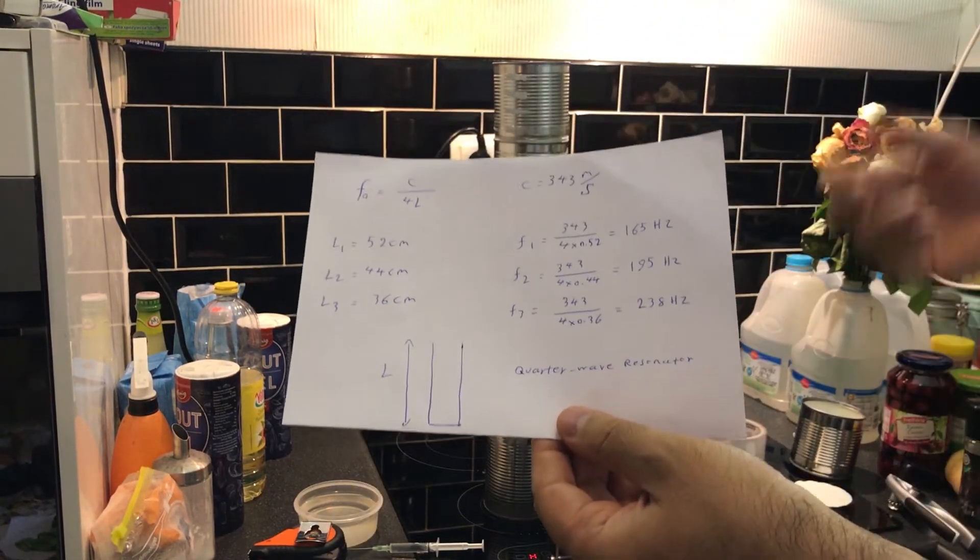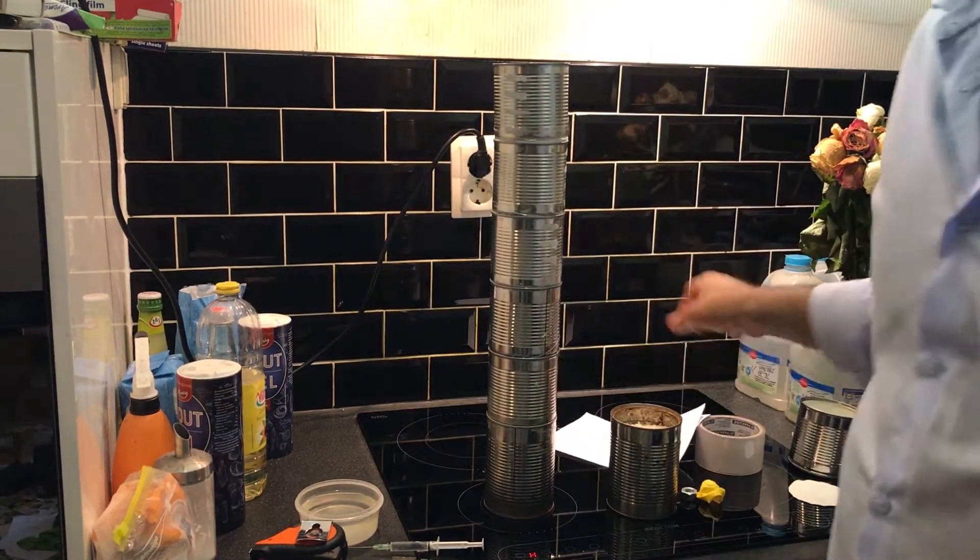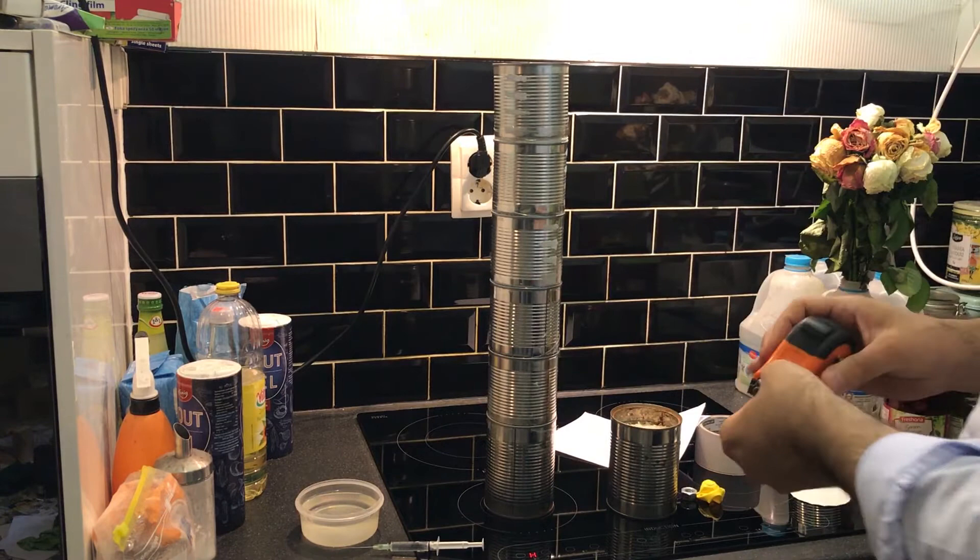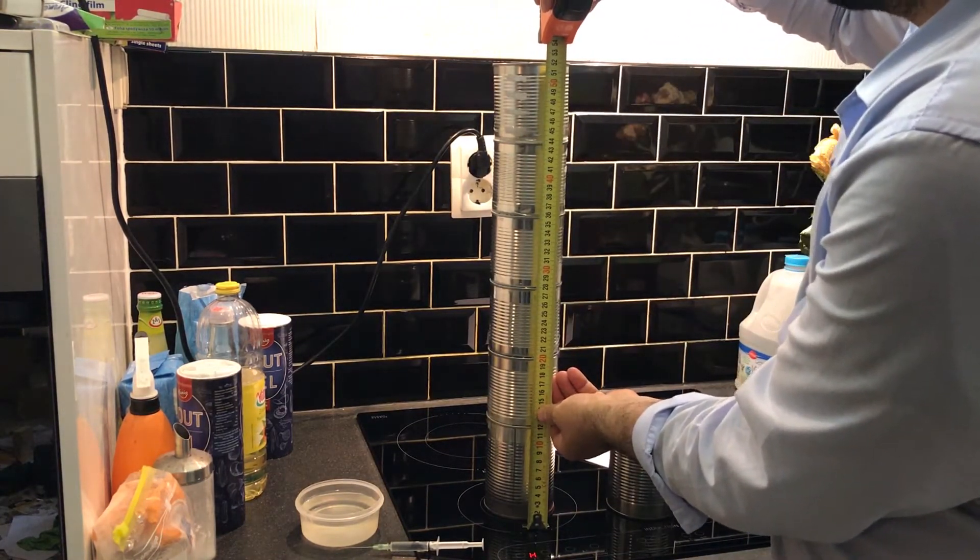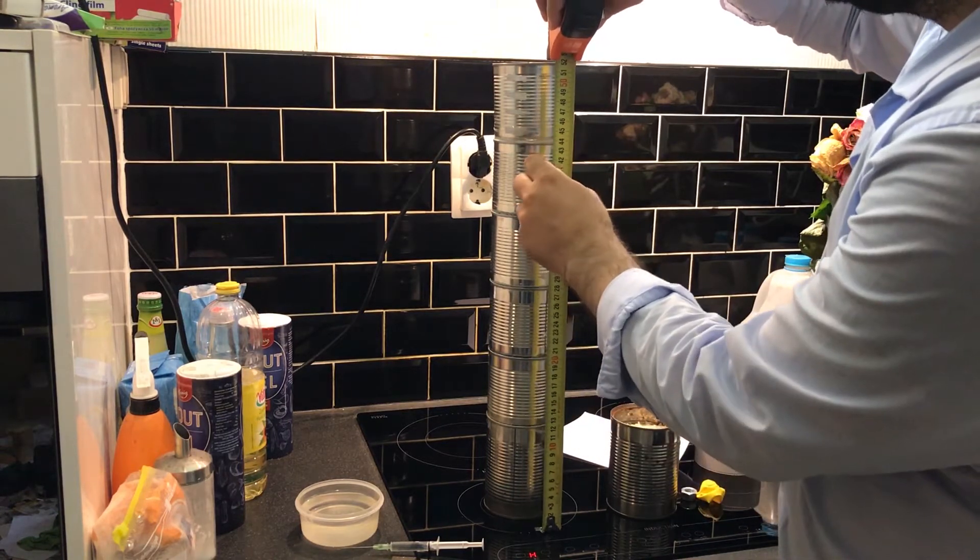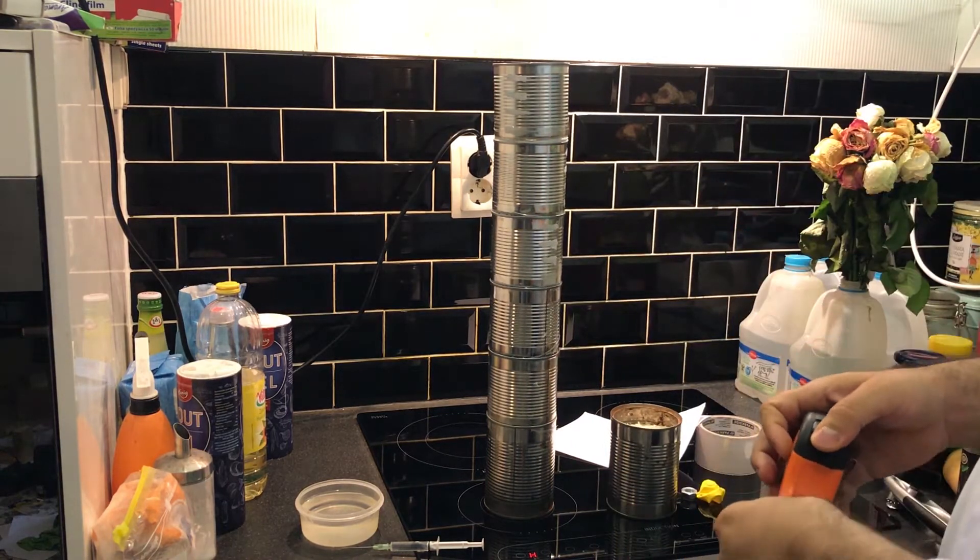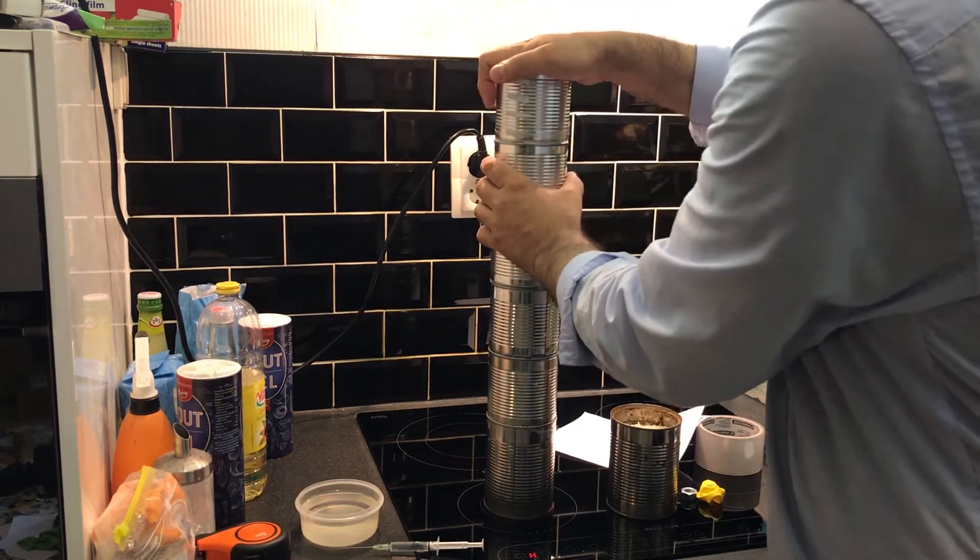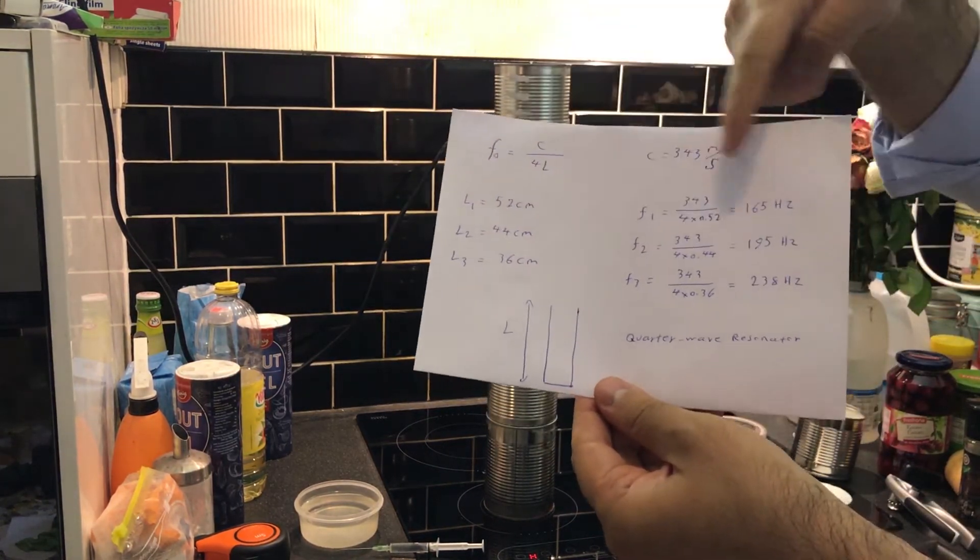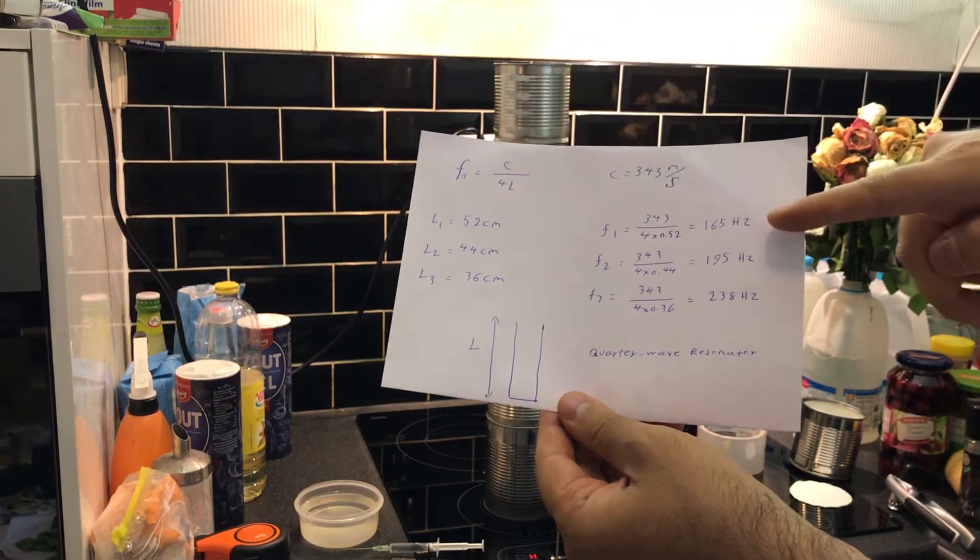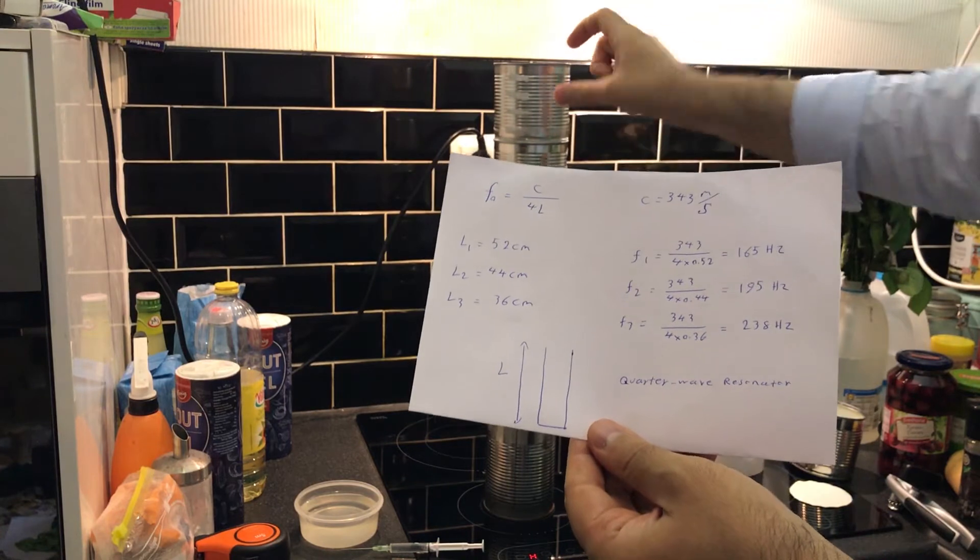C is 343 meters per second. Now I show you the length of this device: up to the top stage is 52 centimeters, and up to here is 44 centimeters, and up to here is 36 centimeters. So if I have everything here, the resonant frequency of this device is 165 Hertz. And if I remove the top part, then the resonance frequency will be 238 Hertz.